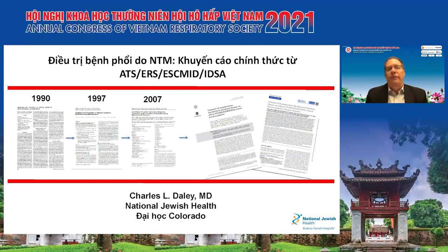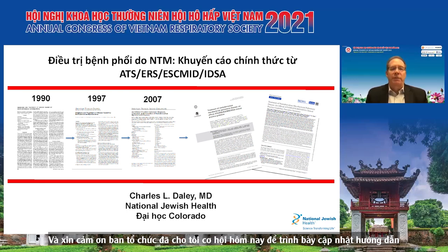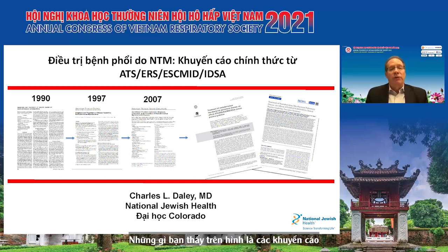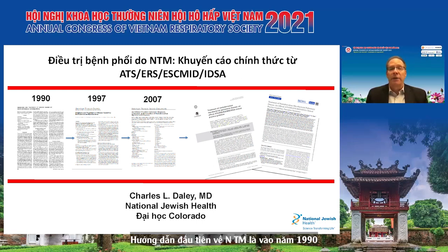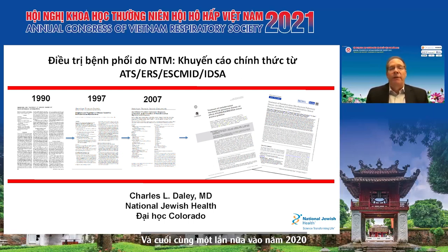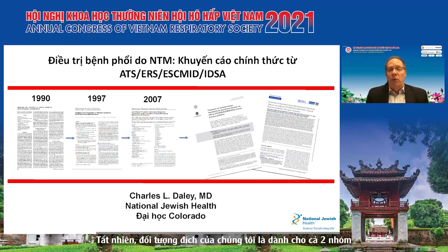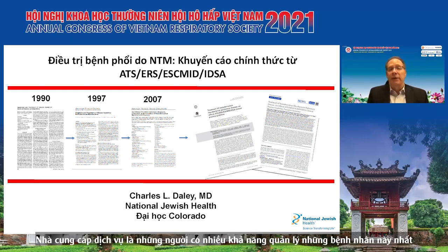Greetings, colleagues and friends in Vietnam, and thank you to the organizers for giving me the opportunity today to update you on the guidelines for the treatment of non-tuberculous mycobacterial pulmonary disease. Of course, I wish I could be there in person. What you see before you are the guidelines supported by the American Thoracic Society. The first guideline on NTM was in 1990, revised in 1997, then again in 2007, and finally in 2020. Our goal was to target both pulmonologists and infectious disease providers who are the people most likely to manage these patients.